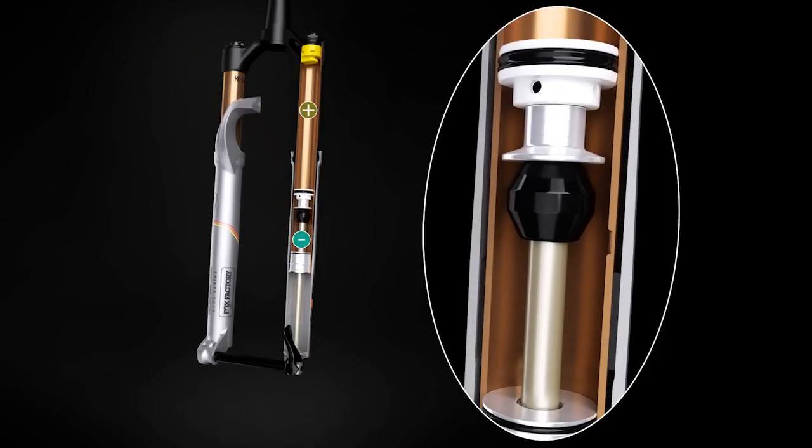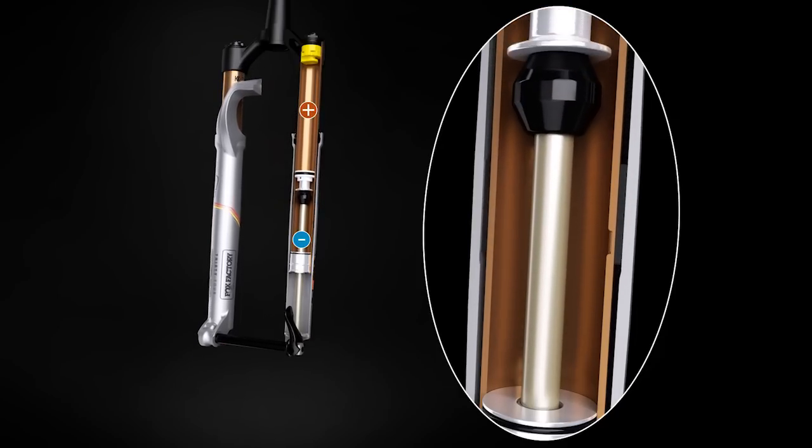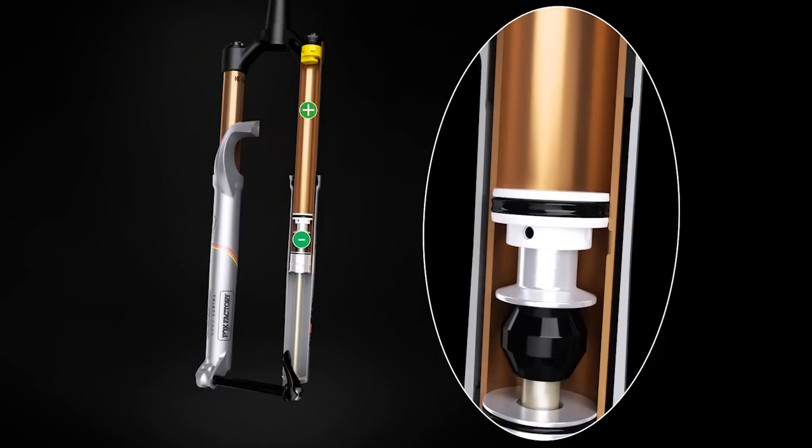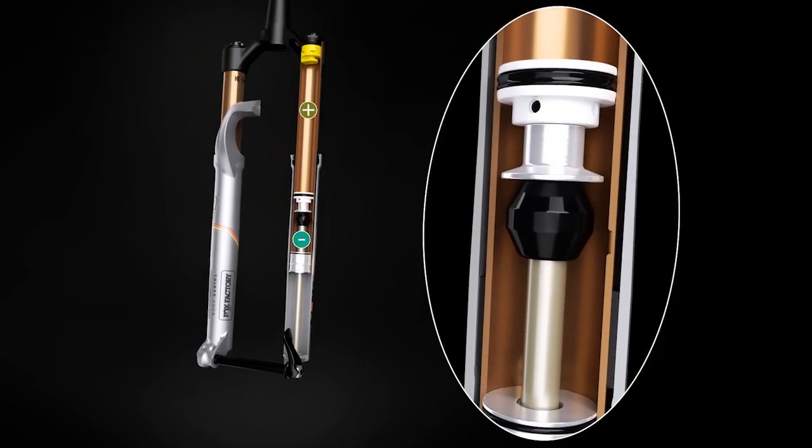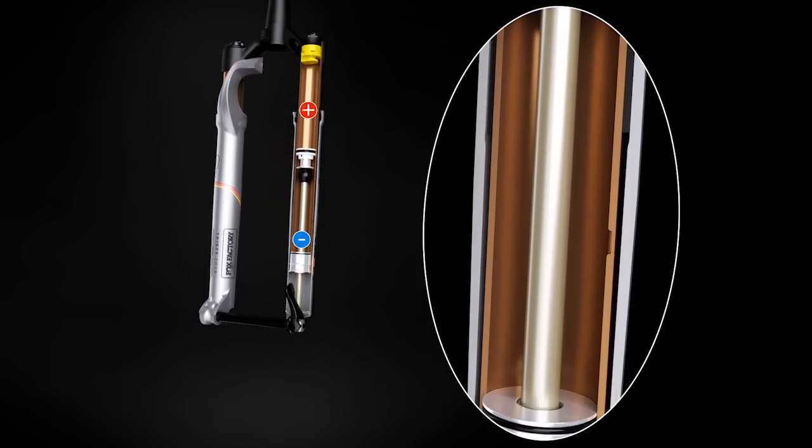During compression, the air piston seal moves up past the bypass port, sealing off the positive air chamber from the negative air chamber. Air pressure drops in the negative chamber and builds in the positive chamber to support the rider, absorb impacts, and resist bottoming out.